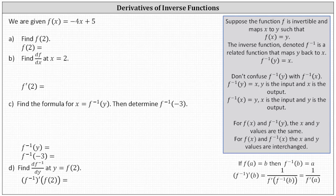We're given f of x equals negative four x plus five. For part a, we're asked to find f of two. To determine f of two, we substitute two for x. f of two is equal to negative four times two plus five, which equals negative eight plus five, which is negative three.